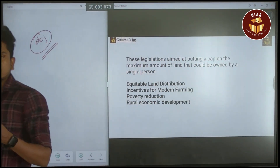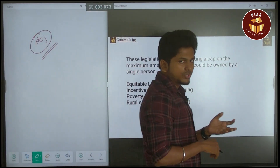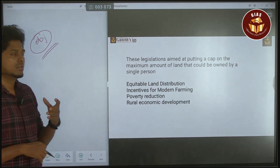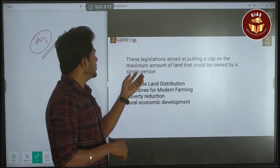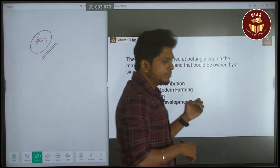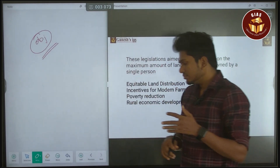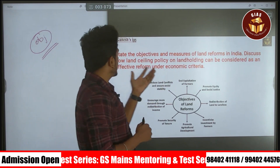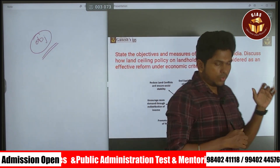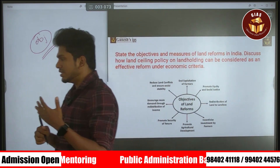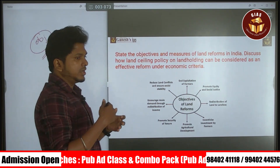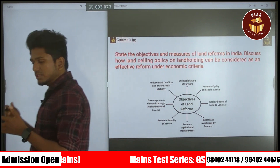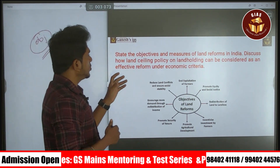Next, discuss how the land ceiling policy is effective under economic criteria. Land ceiling means putting a cap on the maximum amount of land that can be owned by a single person. In terms of effectiveness, it provides equal distribution of land and helps overcome poverty for those living below the poverty line. However, you must also discuss the other side of this policy since the question asks to 'discuss.'